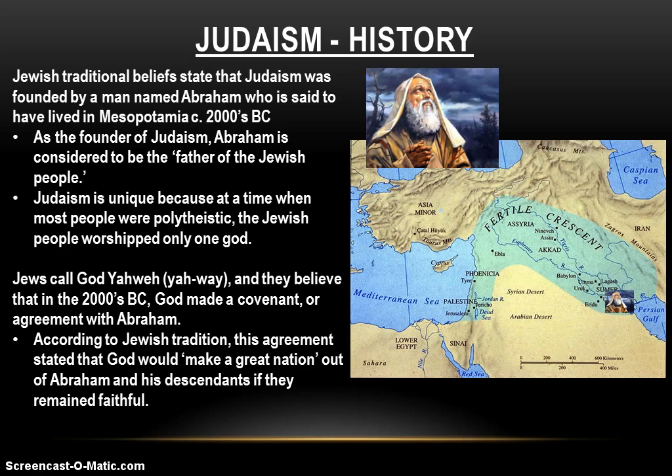As the founder of Judaism, Abraham is considered to be the father of the Jewish people, and he's connected to the other two monotheistic religions as well. In this period in history, Judaism would be incredibly unique because the vast majority of ancient cultures and religions were polytheistic. The Jewish people were unique because they are monotheistic, worshipping only one God in a polytheistic world.